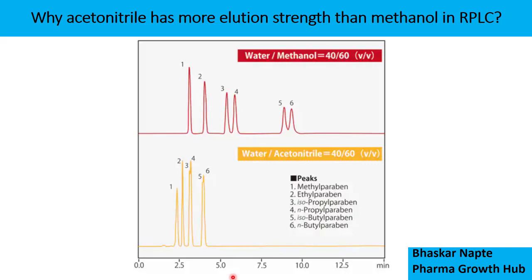Here is a practical example: using the same ratio of water:methanol 40:60 versus water:ACN 40:60, on the same column with everything else identical, you will still observe different retention times. This makes it very clear that ACN has more elution strength compared to methanol in reverse phase liquid chromatography.